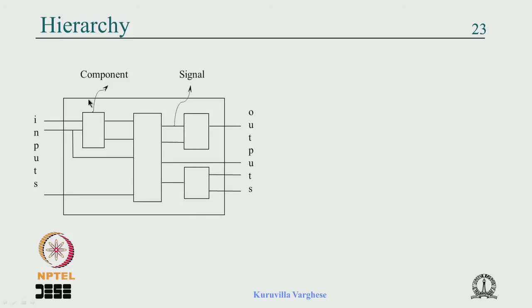Let us quickly run through the slides before we get into today's lecture. In structural coding, which is used for top-down design, you have a top-level entity with names and ports. This is composed of some interconnection of components, and we describe this as a net list.